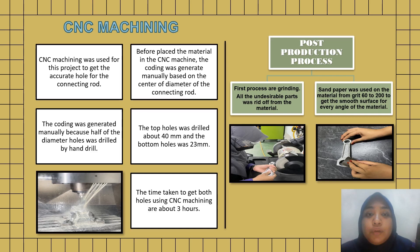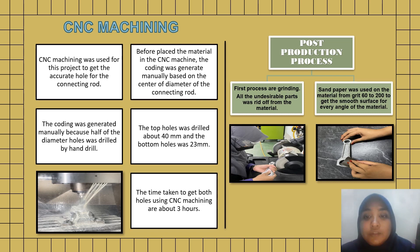We then proceeded to the post-production process, which is grinding and sanding. The first step of grinding is removing undesirable parts from the material. Then we used sandpaper from grit 60 to 200 to achieve a smooth surface on every angle of the material.